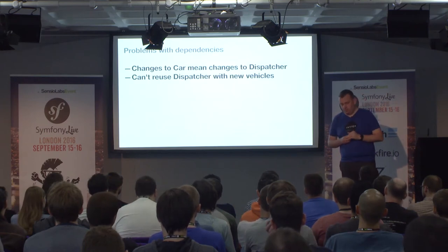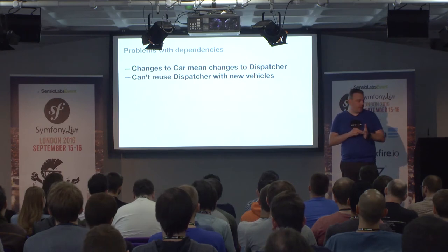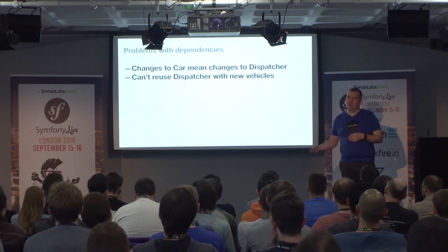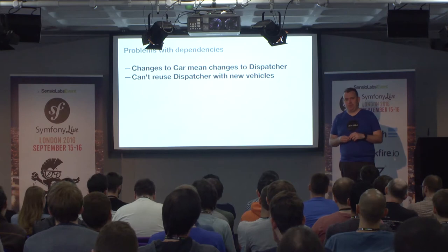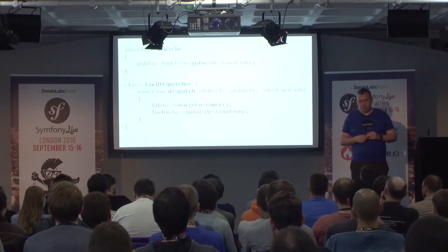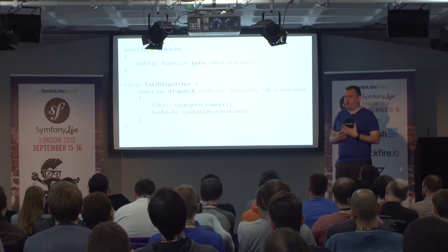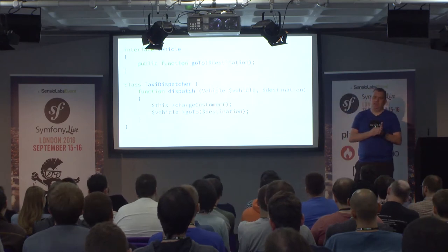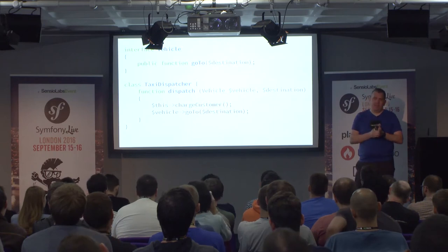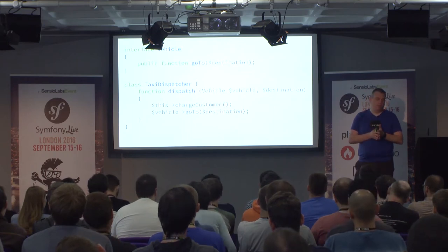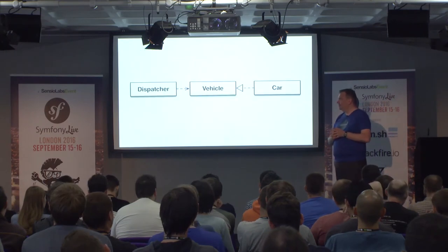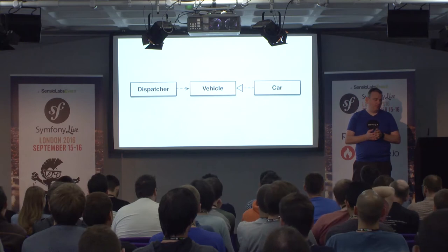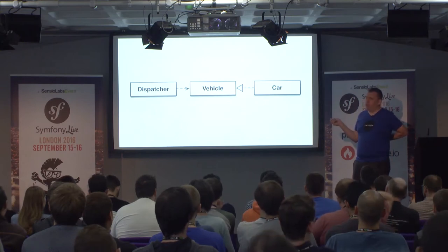The obvious problem is you have to make these changes. I also can't reuse the dispatcher when I do the next iteration of my startup and start having drones taking people to places. So the route-one abstraction is to add an interface — define something like a vehicle, type-hint against that instead, make your car implement vehicle. And you've immediately improved the design of your application, or at least you've made it less coupled.